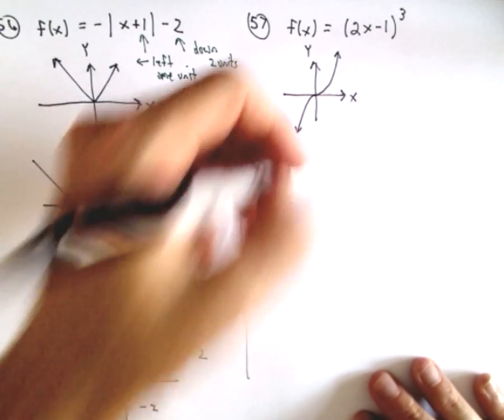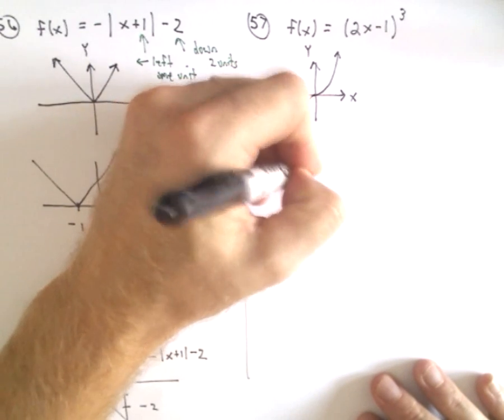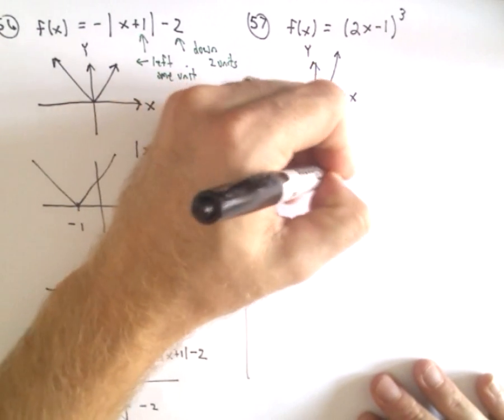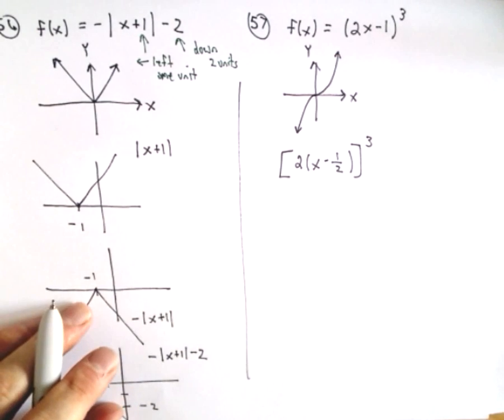I'm going to rewrite this a little bit, so we could write this as 2(x - 1/2)³. And the reason why I'm doing that is...